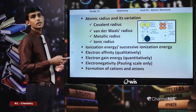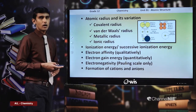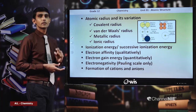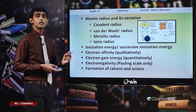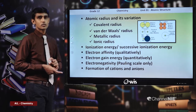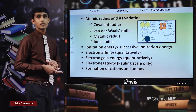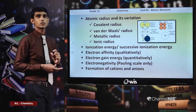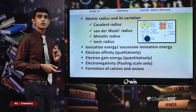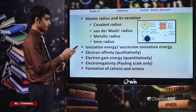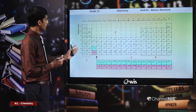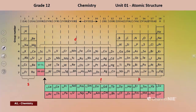Before I explain these properties one by one, I will take a few minutes to explain some important trends of the periodic table related to the last lesson. After that, we will explain another point about the nuclear charge, the effective nuclear charge and the shielding effect. If you look at the modern periodic table, elements belong to different blocks: S block, P block, D block and F block.